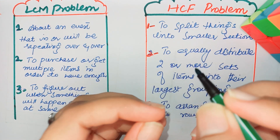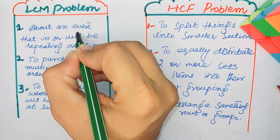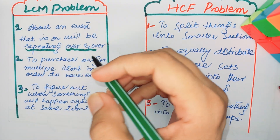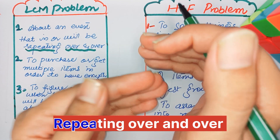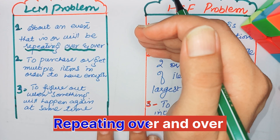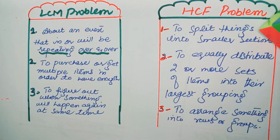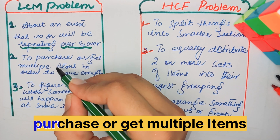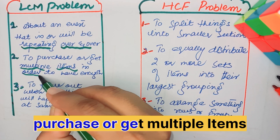Let's have some identification keywords. The first is about an event that is or will be repeating over and over. When we have an event which is happening again and again, or will repeat again and again, it means that problem is an LCM problem. The second keyword is to purchase or get multiple items in order to have enough — when you are purchasing multiple items, it's an LCM problem.